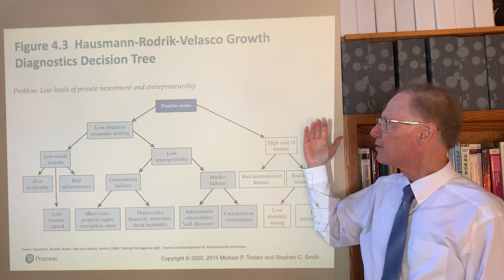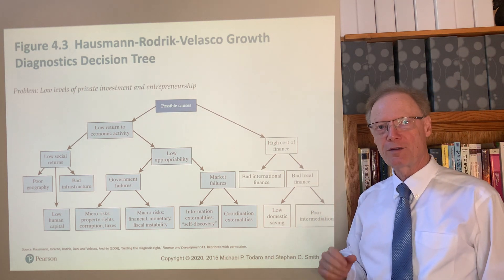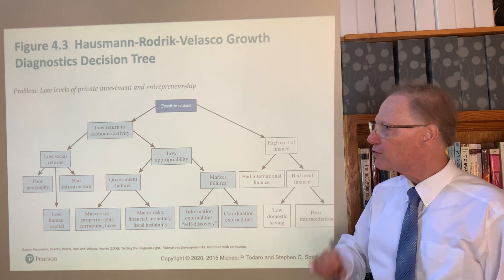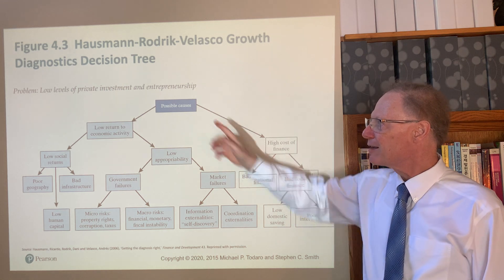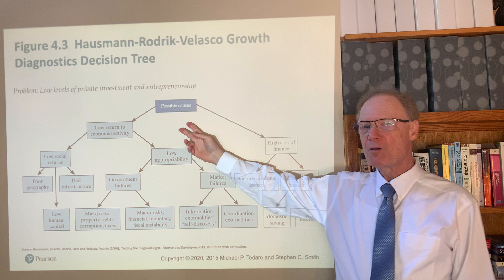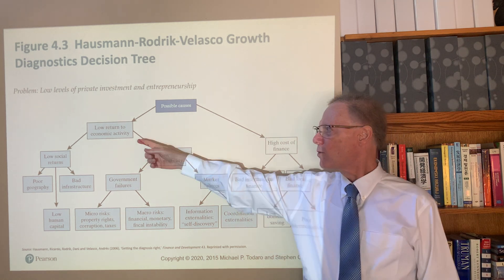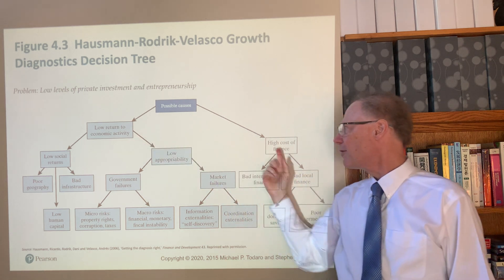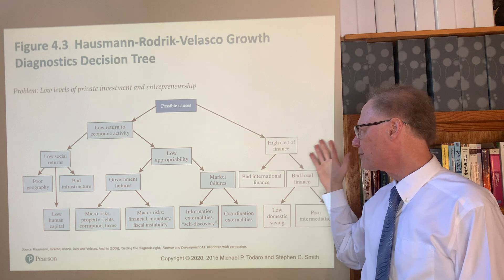The authors look at a decision tree approach in order to determine what is the likely most binding constraint on increasing private investment and entrepreneurship. They divide the possible causes for this into two parts: one is a low return to economic activity specifically, and the other is problems in financing it — high costs of finance.